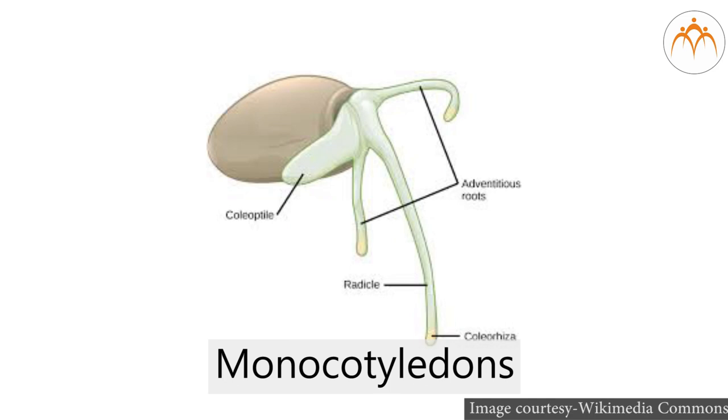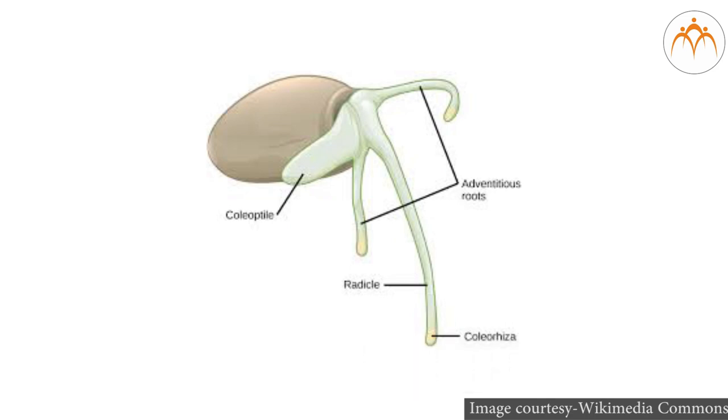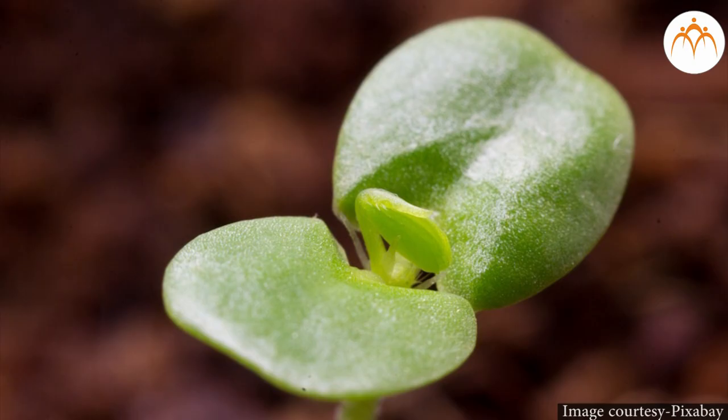These seeds on germination produce radicle and plumule. Thus, cotyledon, plumule and radicle are parts of seeds. Seeds germinate and produce new plants. Today, you have studied flower, fruits and seeds through this video.